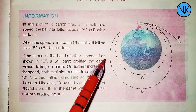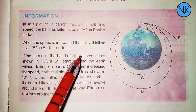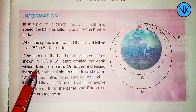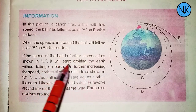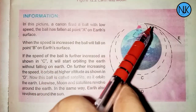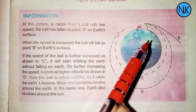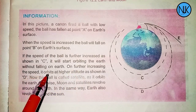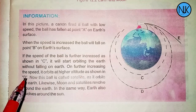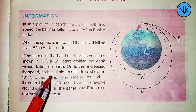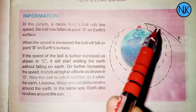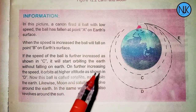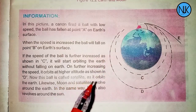If the speed of the ball is further increased, as shown in C, it will start orbiting the Earth without falling on the Earth. This ball is now called a satellite. It orbits the Earth.